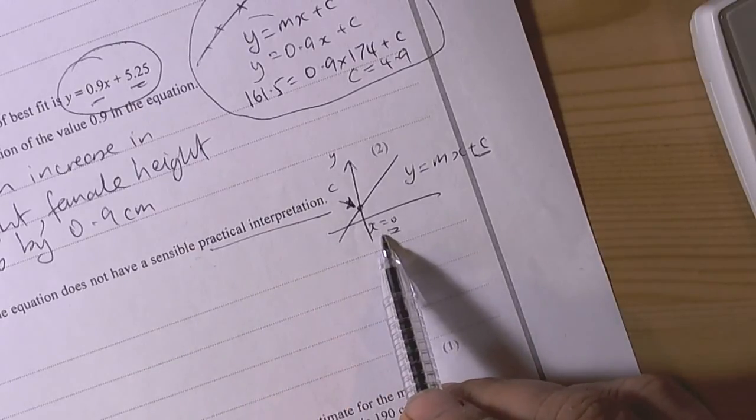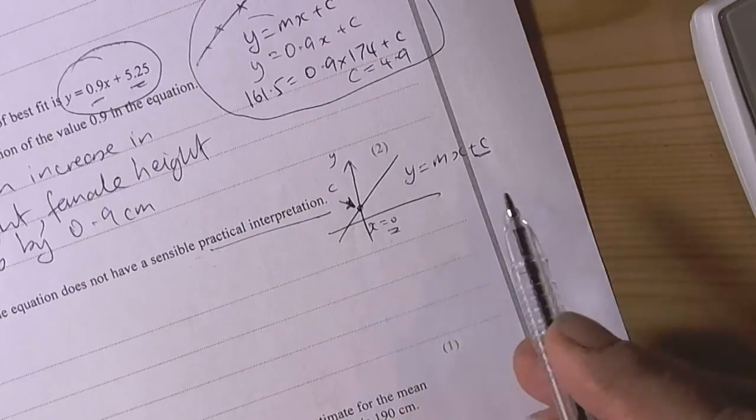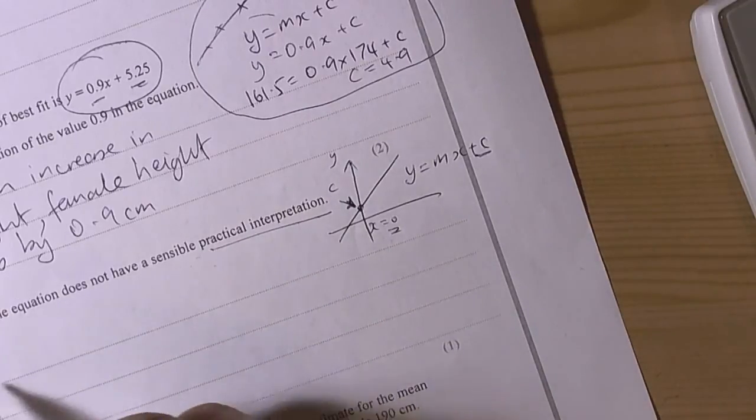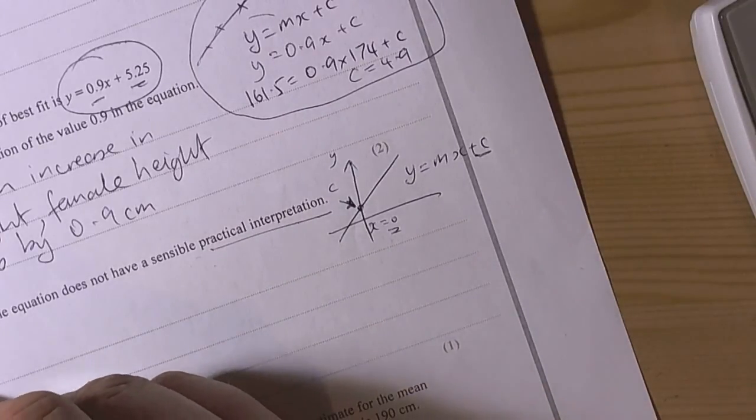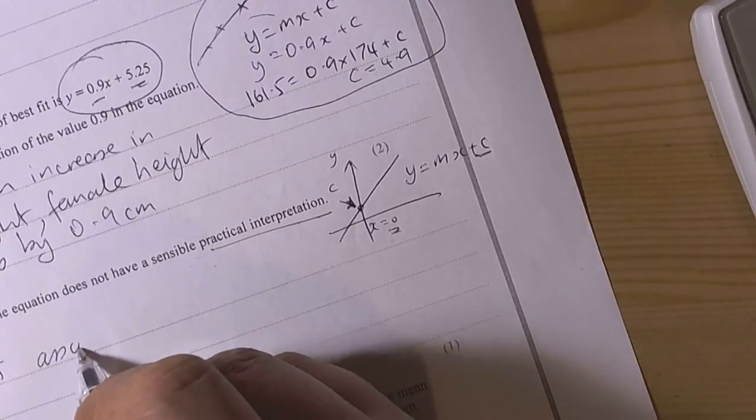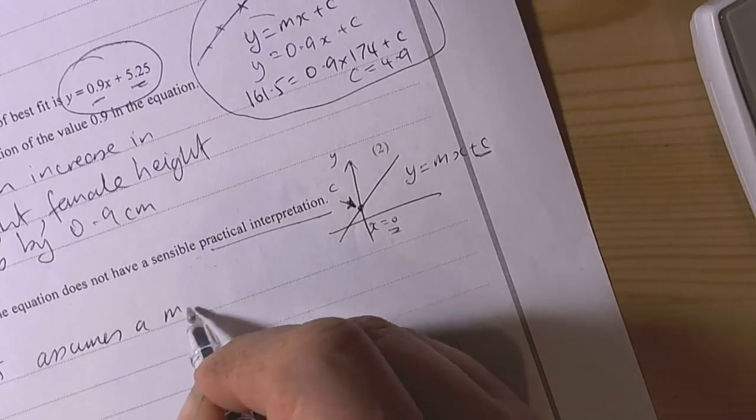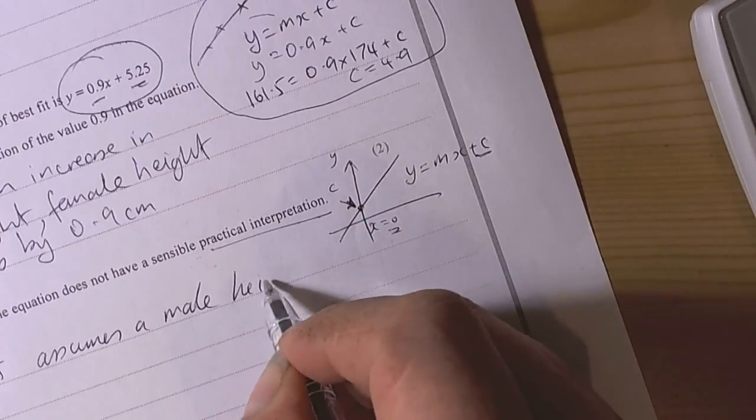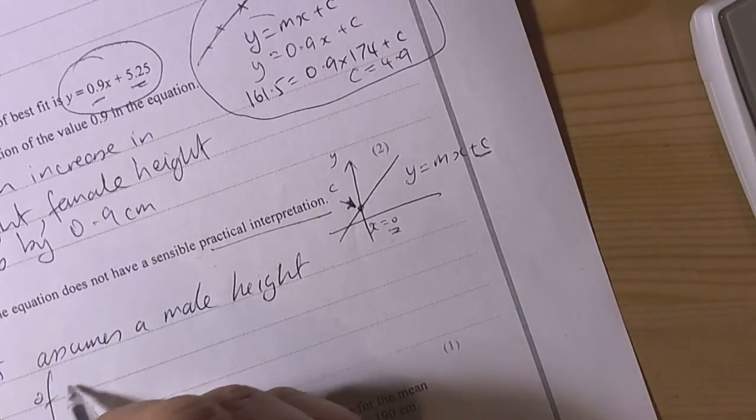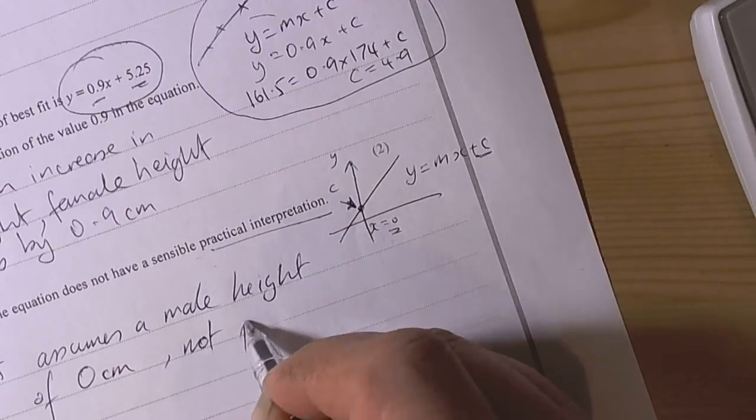Why doesn't it have any sensible practical implications? Well, let's assume that the male height was 0, which we know from nature is not practical. So 5.25 assumes a male height of 0cm - not practical.